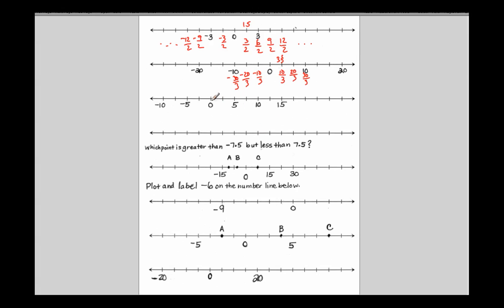Let's see if you can do this next one on your own. We know it's a length of 5 being partitioned into 2 equal pieces. So this is 5 halves. That means this would be 10 halves, 15 halves, 20 halves. And 10 divided by 2 is 5, so every one of these points is worth 5 halves, or 2 and a half, or 2.5. This would be negative 5 halves, negative 10 halves — which is negative 5 — negative 15 halves, and I can keep on going.